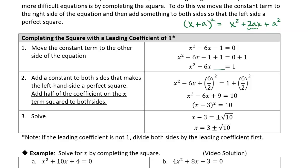Starting with x squared minus 6x minus 1, we add 1 to both sides to get x squared minus 6x equals 1. Now we add something to both sides to make the left side a perfect square: half of negative 6 is negative 3, and squaring that gives positive 9. Adding 9 to both sides, the left side becomes the perfect square x minus 3 squared, equal to 10. Unsquaring both sides: x minus 3 equals plus or minus square root of 10, so x equals 3 plus or minus the square root of 10 — two solutions: 3 plus root 10 or 3 minus root 10.